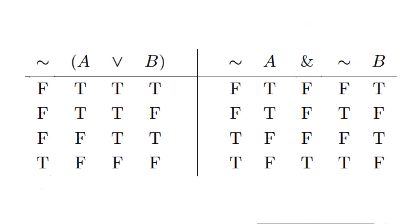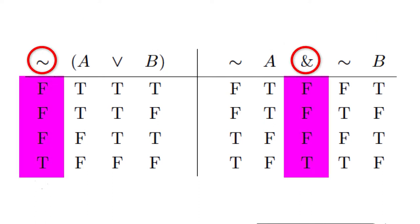We abbreviated the truth table by omitting the reference column, since we can input those values beneath the two atomic sentences, A and B. As you can see, the truth value arrays for the main connectives are identical.